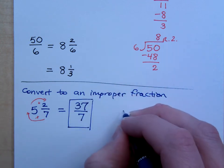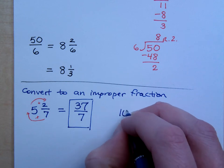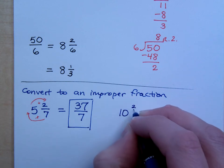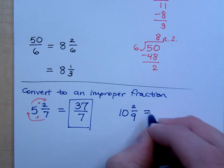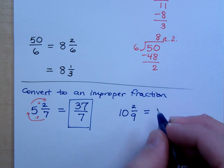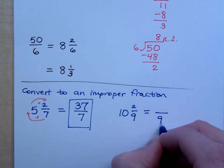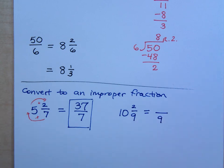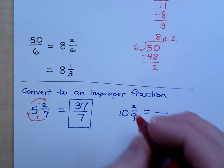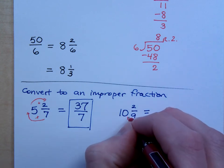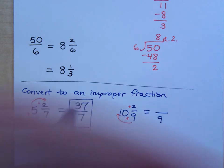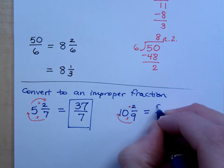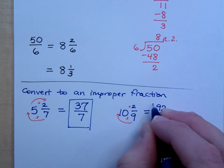If I have 10 and 2 ninths, what's the denominator for the improper fraction? The denominator is 9. How do I get that numerator? So 9 times 10, and then you're going to add in the 2. So you get what? You get 92.